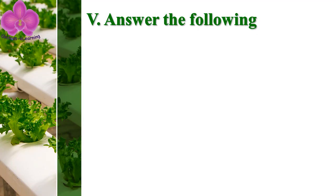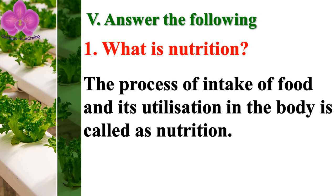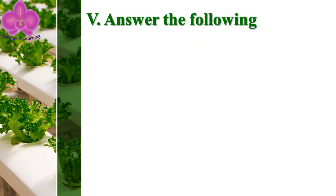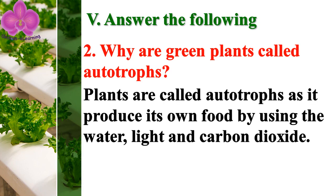Answer the following. First question: what is nutrition? The process of intake of food and its utilization in the body is called nutrition. Question number two: why are green plants called autotrophs? Plants are called autotrophs as they produce their own food by using water, light, and carbon dioxide.